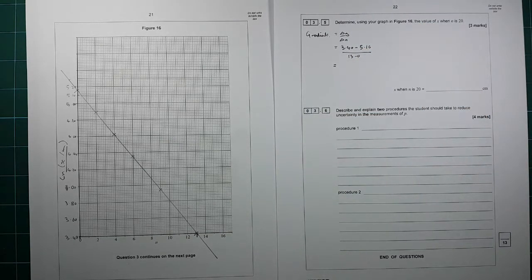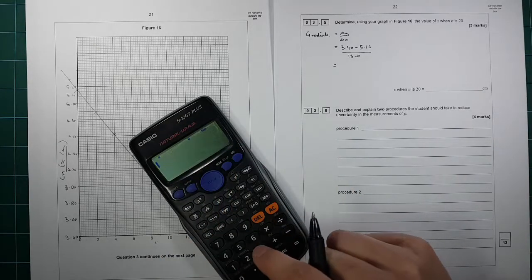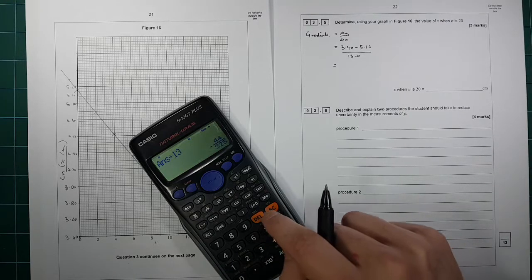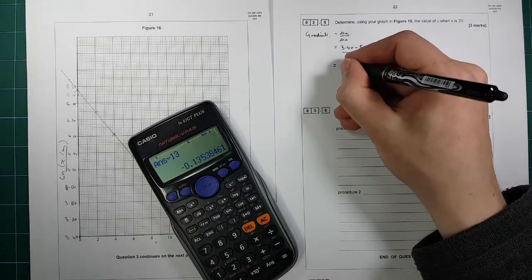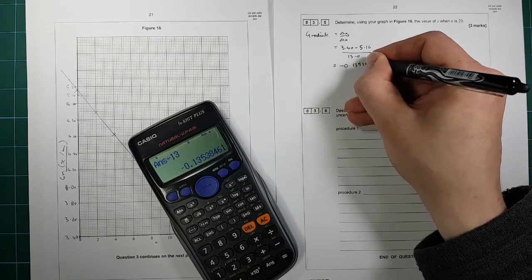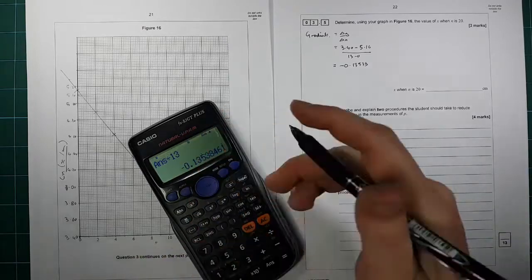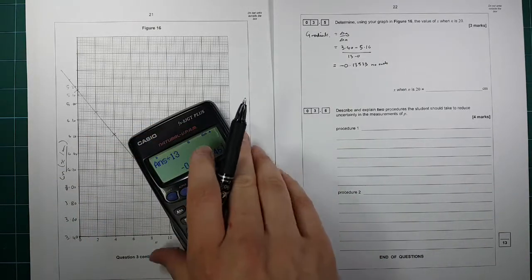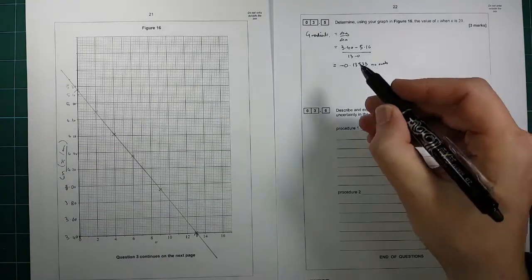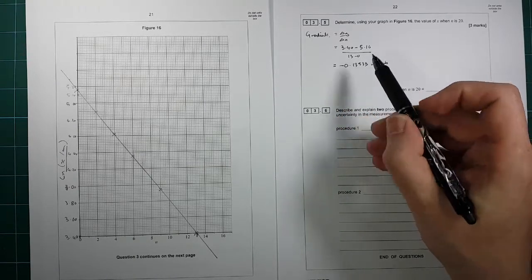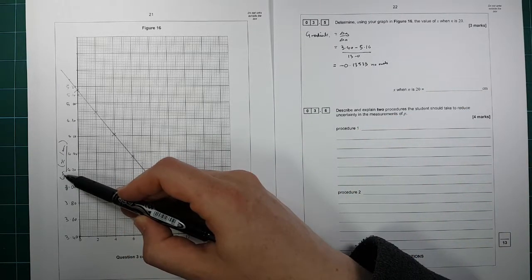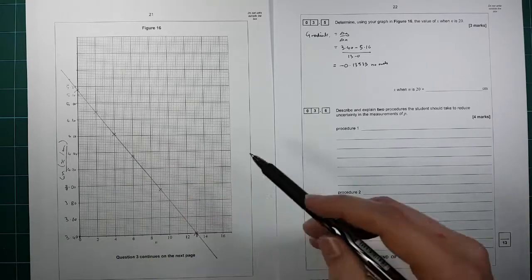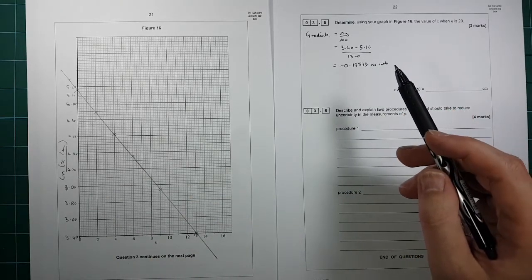And that gives us 3.4, take away 5.16, divided by 13, gives us minus 0.13538. And the units of that are no units, because that's got no units and that's got no units. You could also say the units of that are log centimeters as well, but that's what they tend to do in AQA, but technically it's got no units.